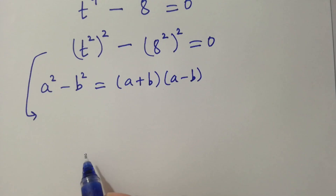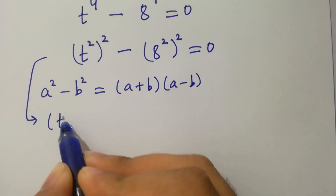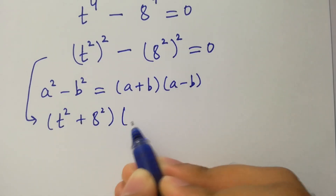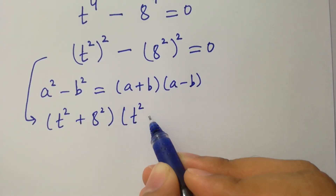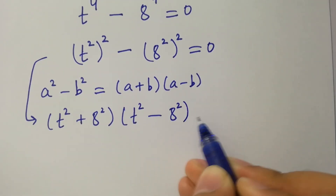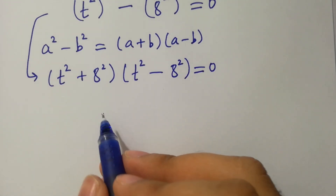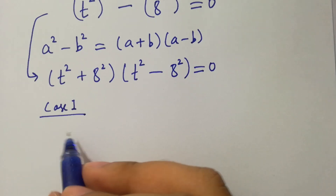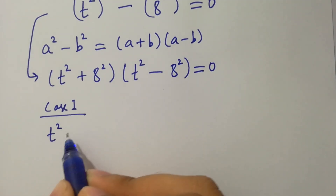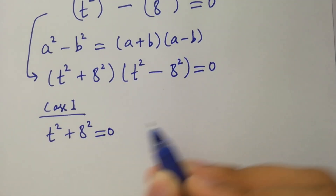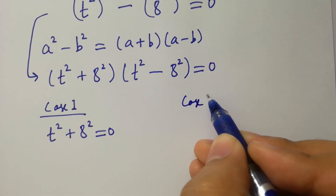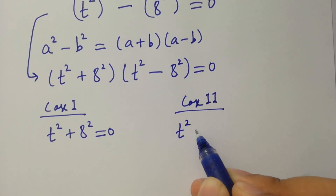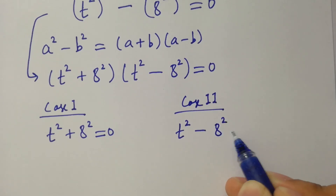We have t squared plus 8 squared times t squared minus 8 squared equal to 0. We have two cases here. Case one: t squared plus 8 squared equal to 0. Case two: t squared minus 8 squared equal to 0.